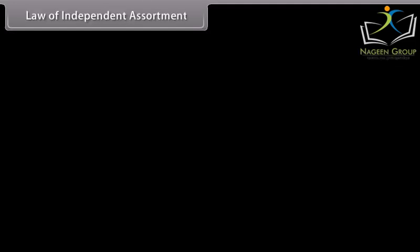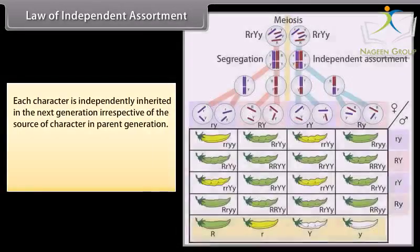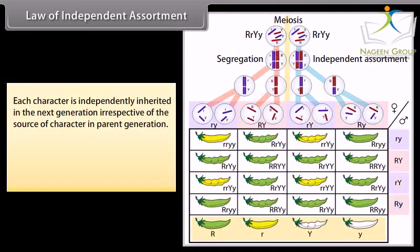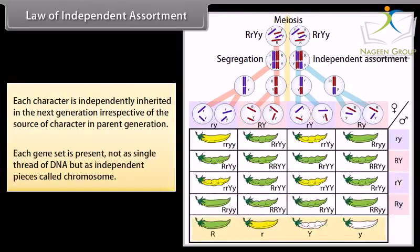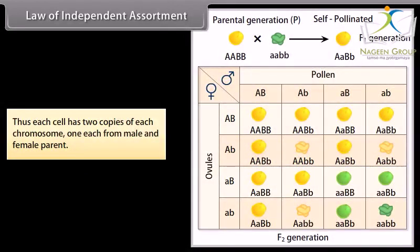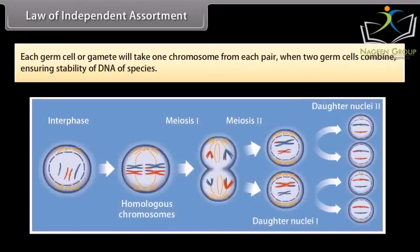Law of Independent Assortment: each character is independently inherited in the next generation, irrespective of the source of the character in the parent generation. Each gene set is present not as a single thread of DNA, but as independent pieces called chromosomes. Thus, each cell has two copies of each chromosome — one each from the male and female parent. Each germ cell or gamete will take one chromosome from each pair; when two germ cells combine, this ensures the stability of DNA of the species.